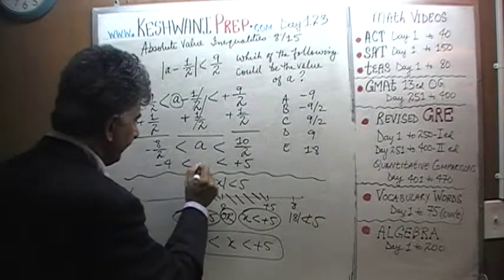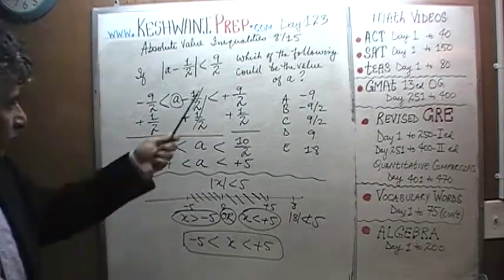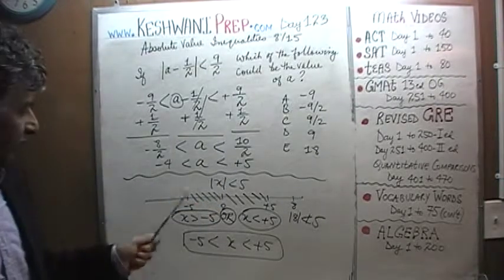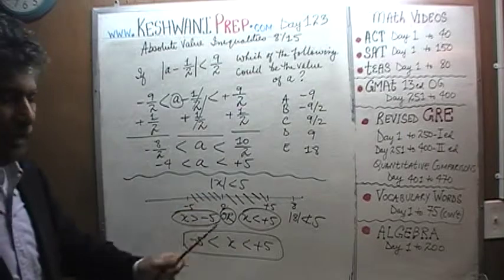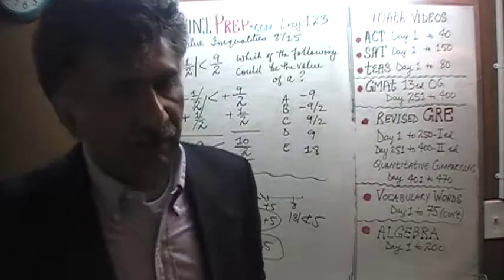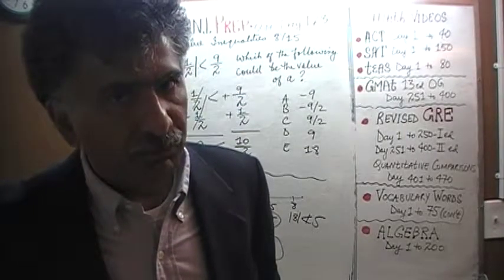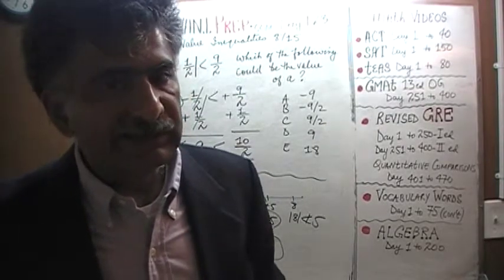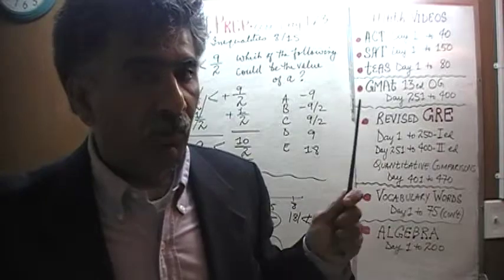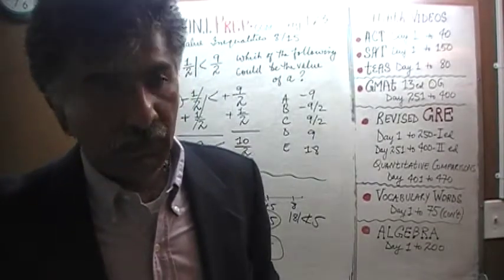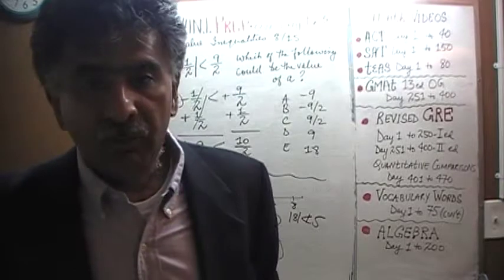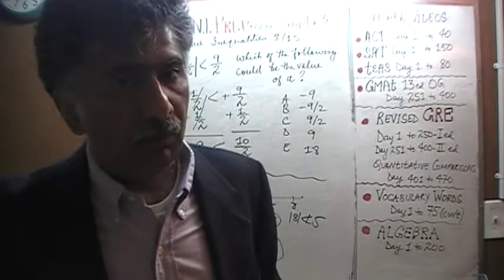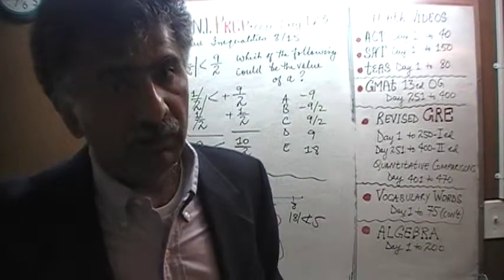What we just showed is that A would have to lie somewhere between negative four and positive five. Any value between negative four and positive five is allowable. Anything below negative four or above positive five is not allowable. We are given five answer choices — four will fall in the non-allowable region and only one in the allowable region.